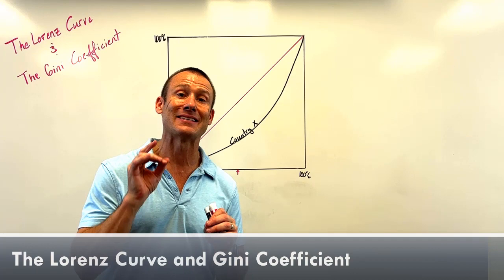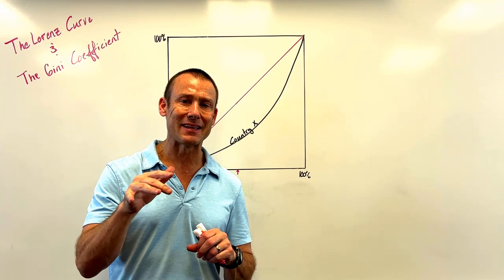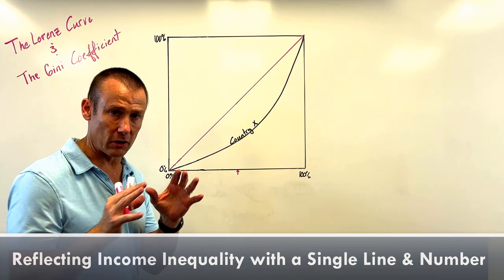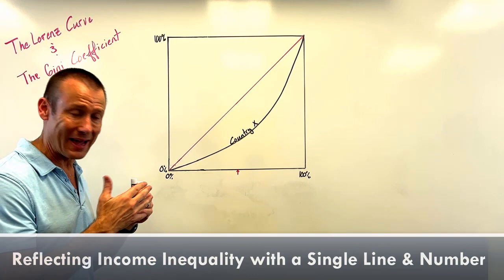In 1905, Max Lorenz came up with the Lorenz curve, and people said that's a nifty way to represent the income inequality of a country. Here's basically what he did: he wanted to represent income inequality among the population of a country, so he put income on one axis and population on the other.